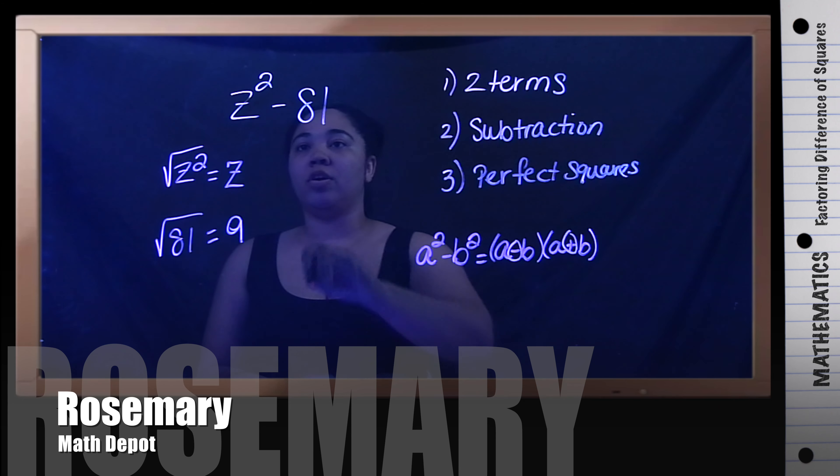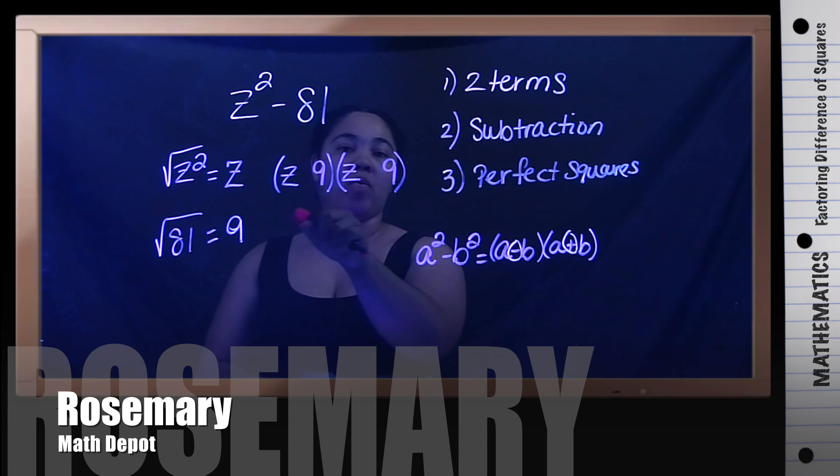So in this particular problem, I'm going to set them up. I know that the square root of z squared is z, so I'm going to put both of them here. And I also know that the square root of 81 is 9, so I'm going to put the 9's here. Because it's difference of squares, I have to make one negative, and I have to make the other one positive.